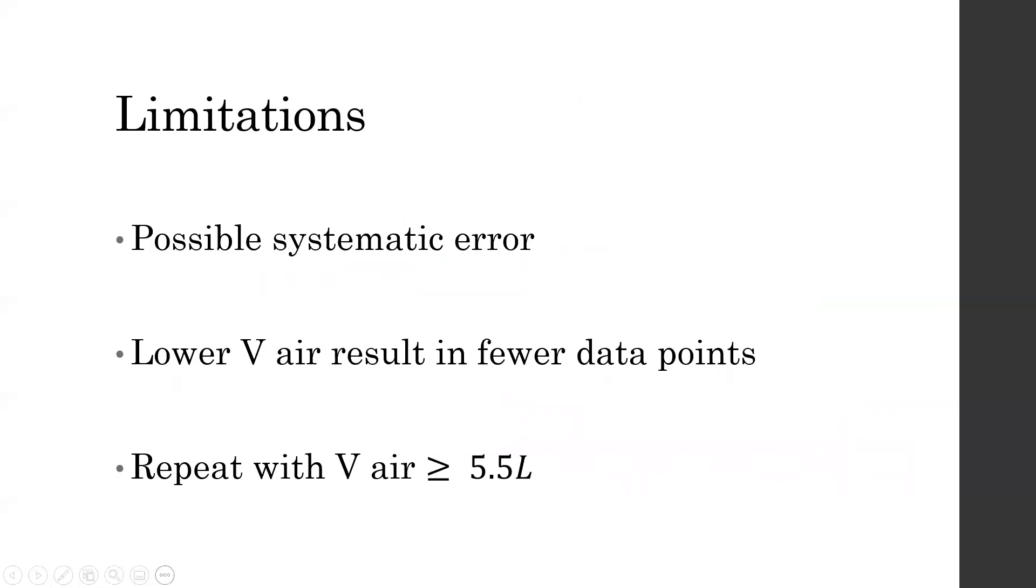The limitations of this experiment are due to a possible systematic error. As mentioned before, the lower air volume trials had fewer data points to track the motion and were therefore likely less accurate. To accommodate for this, we recommend repeating the experiment but constraining the air volumes to be greater than about 5.5 liters, as this is where we observed a significant change in kappa values.